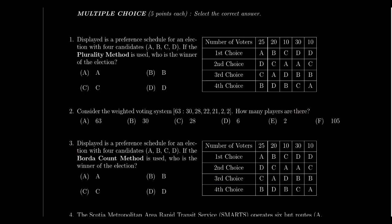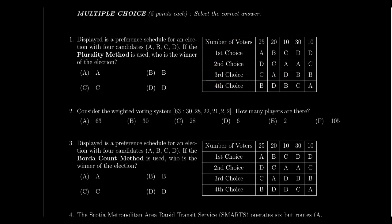In the multiple choice section, there are 10 questions worth 5 points each. A multiple choice answer is all or nothing — you either select the correct answer and get 5 points, or you don't. On this exam, because we have many questions about voting, you'll see a lot of preference schedules. You might see the exact same preference schedule used more than once, and that's okay — the outcome of the election can change depending on the method used.